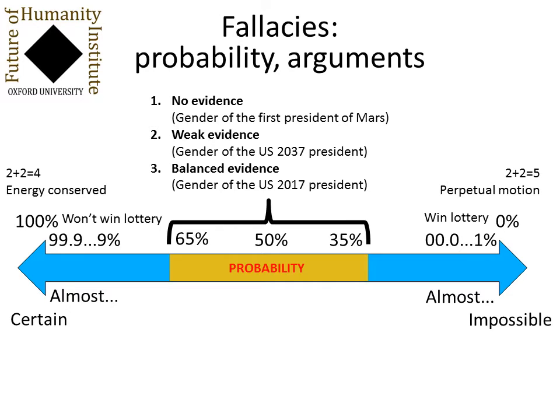It's important to keep in mind the difference between these cases. When there's no evidence, the slightest piece of evidence will send you careening in one direction or the other. Whereas if we have strong balanced evidence, then one extra piece of evidence shifts things very little.